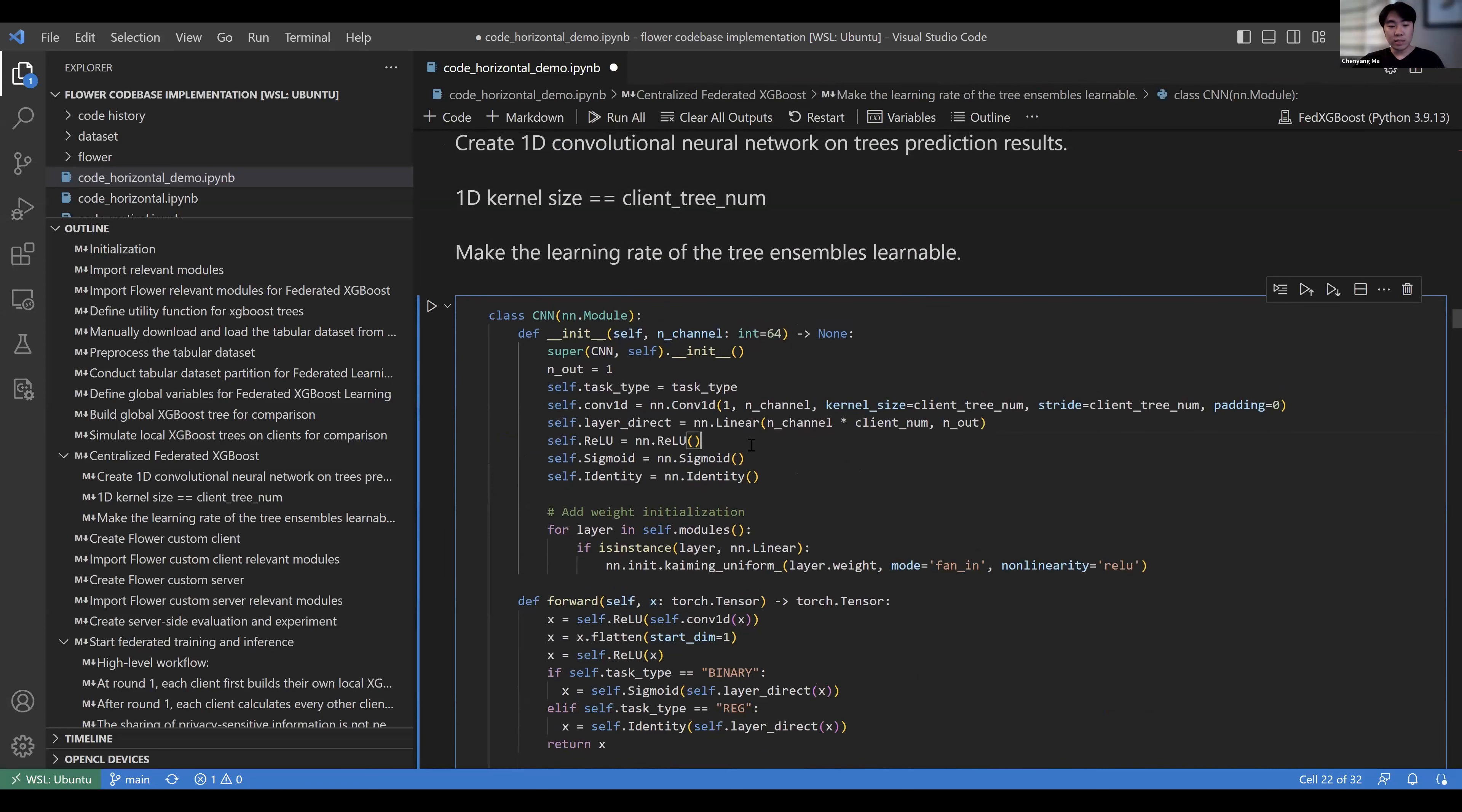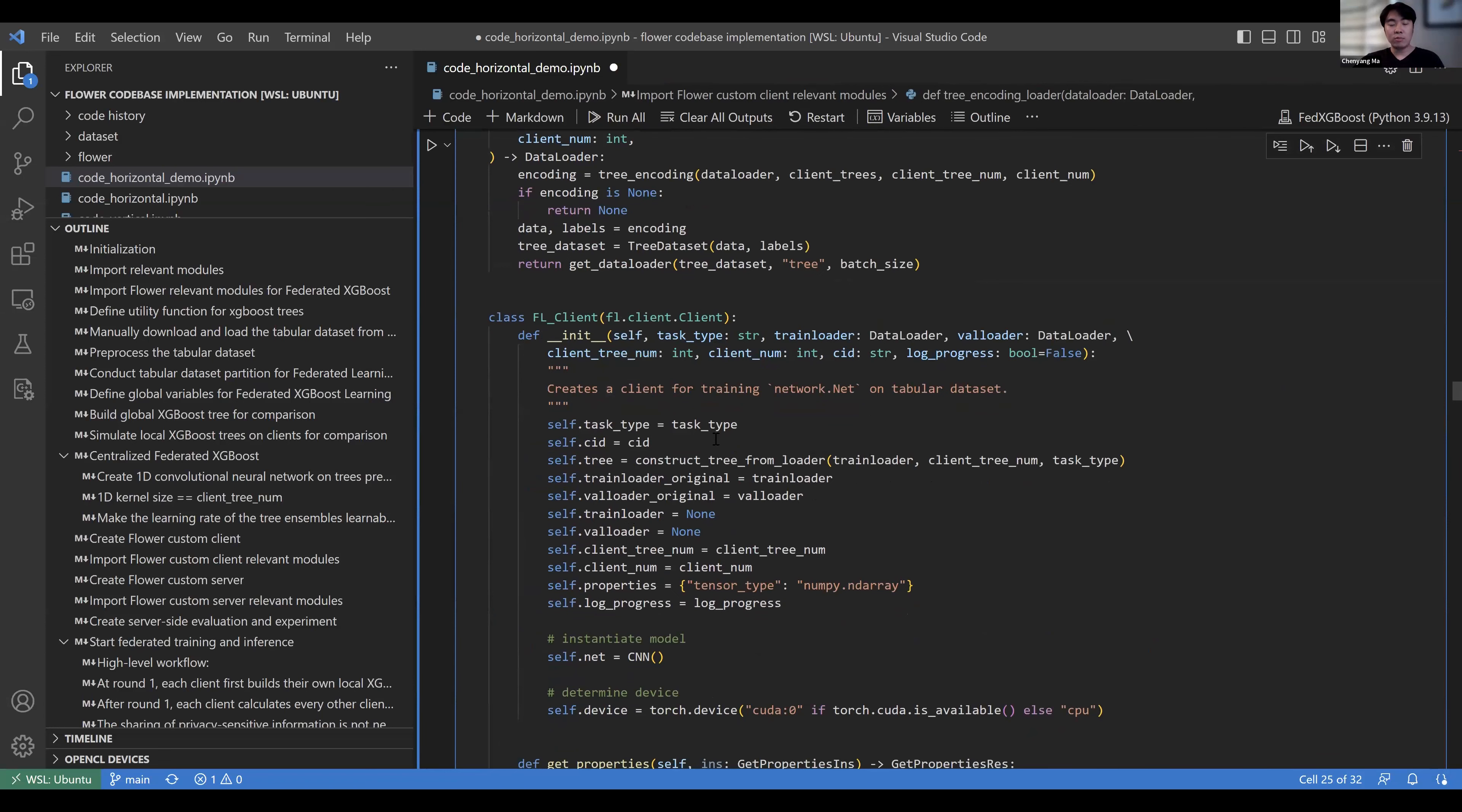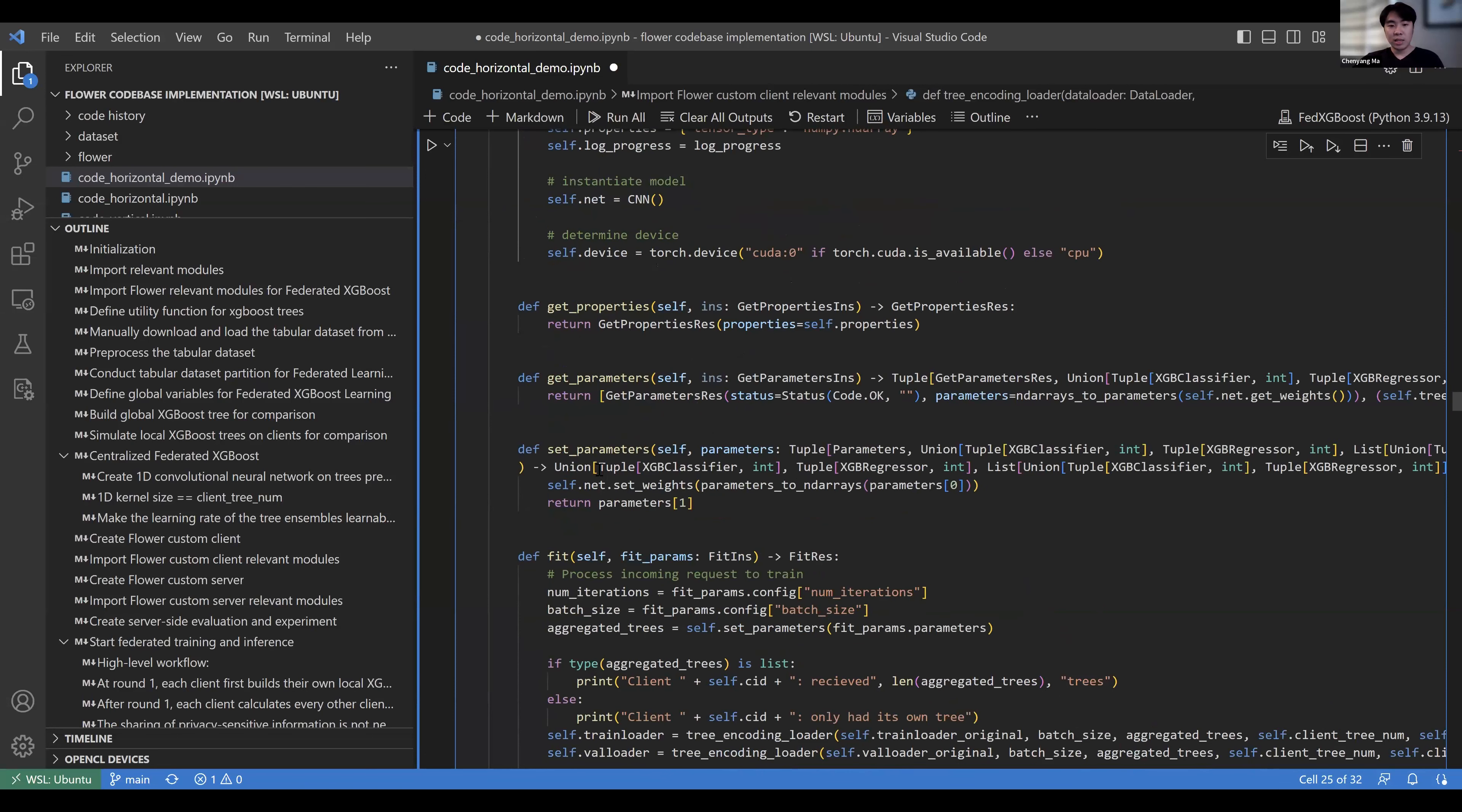Following this, we define the CNN which is used to train learnable learning rates. We also define the training and test functions here. Then we define our customized Flower client. What's really important is that we make revisions to the initialization of the clients, which will have each client's train loader, test loader, the client ID, and also the trees which are constructed from the local data sets. We also overwrite the get_parameters and set_parameters functions because we need to share the tree ensembles in addition to the CNN model parameters.